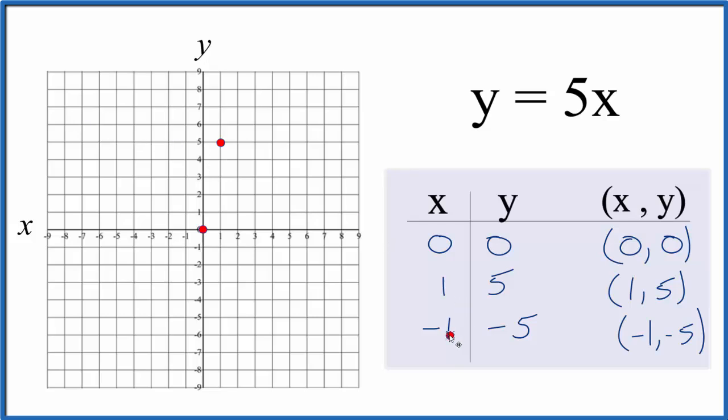And finally, x is negative 1, and y is negative 5. So on the x-axis, we go over and down 5. And we could just draw a line through this, put arrows on the end to show it goes into infinity. And that's the graph for the equation y equals 5x.